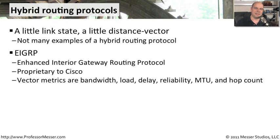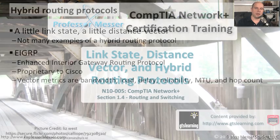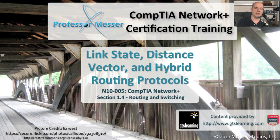By combining a lot of these things together, Cisco feels they have a protocol that works well in many different situations. The disadvantage, of course, is that it is Cisco proprietary, so you'll have to have Cisco technology on both ends to use this type of routing protocol. If everything in your network is Cisco, then EIGRP would probably work fine. But if you have other manufacturers' routers, they're not going to understand EIGRP, and you'll need to choose one of the other routing protocols that everyone is able to use.